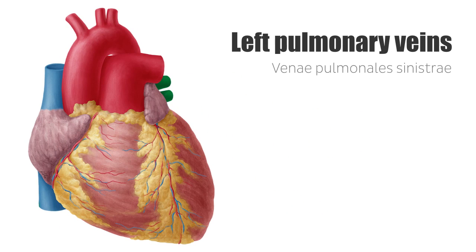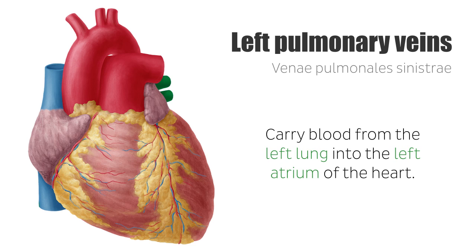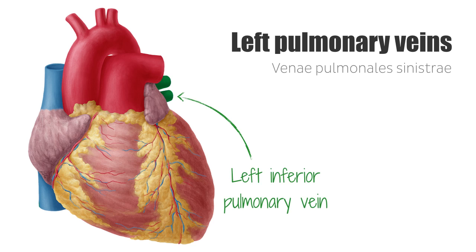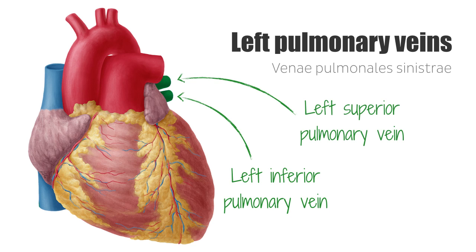The left pulmonary veins carry blood from the left lung into the left atrium of the heart, where it continues to flow outward to the rest of the body. The two left pulmonary veins are also named for their location: the left inferior pulmonary vein and the left superior pulmonary vein.